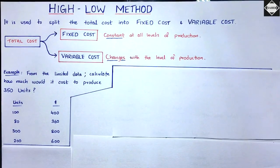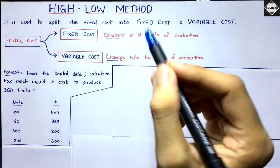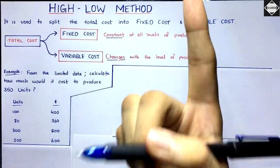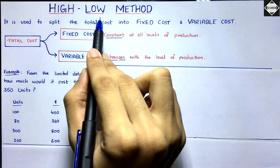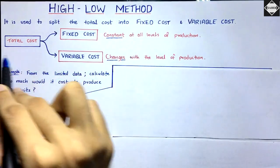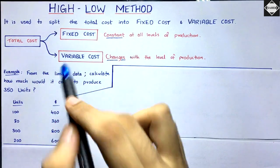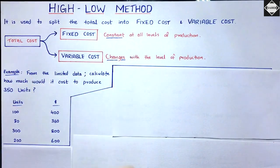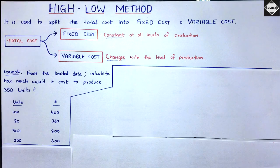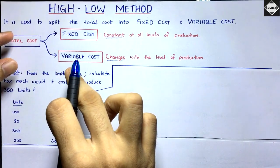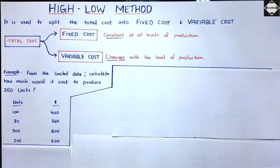Welcome back to Sahab Academy. Today we are going to understand the High-Low Method, a cost estimation technique in cost accounting. We use this technique when we need to find out how much of a total cost is fixed and how much is variable. Total cost is made up of fixed cost and variable cost, and our main objective in the High-Low Method is to split the total cost into these two components.